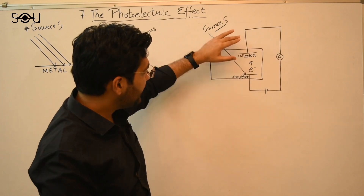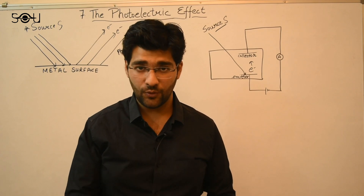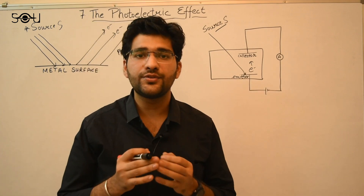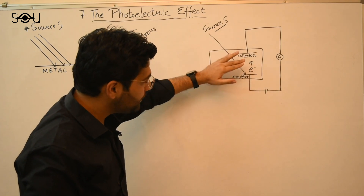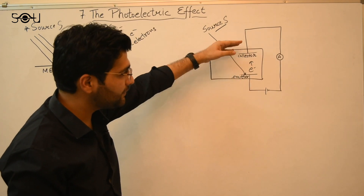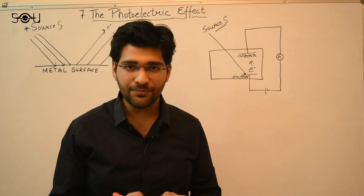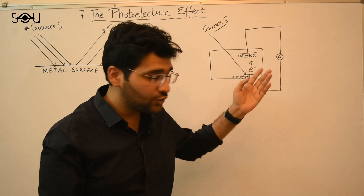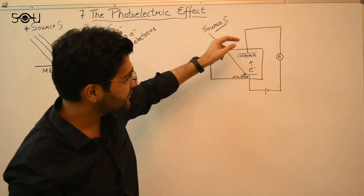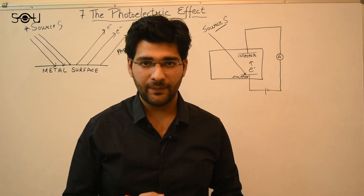Suppose you keep on increasing the negative voltage at the collector. The number of electrons reaching the collector will fall to zero because you have applied so much negative potential that none of the electrons is able to overcome it and reach the collector. At this point, the photocurrent drops to zero. This potential at which the photocurrent drops to zero is known as the stopping potential.